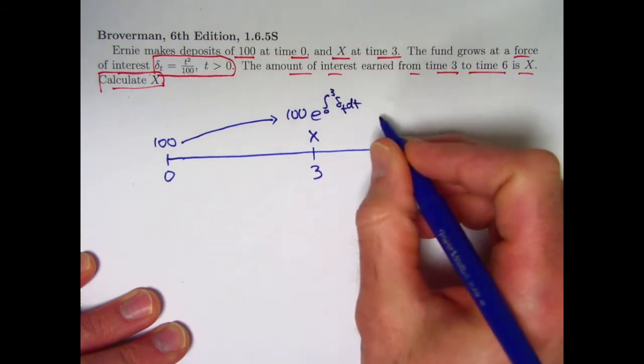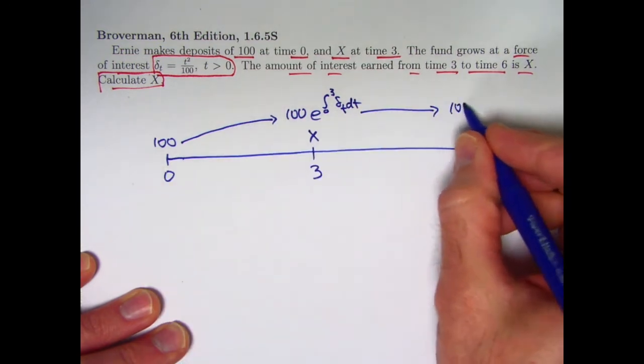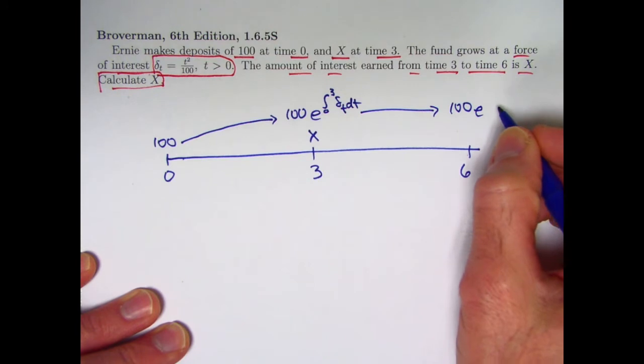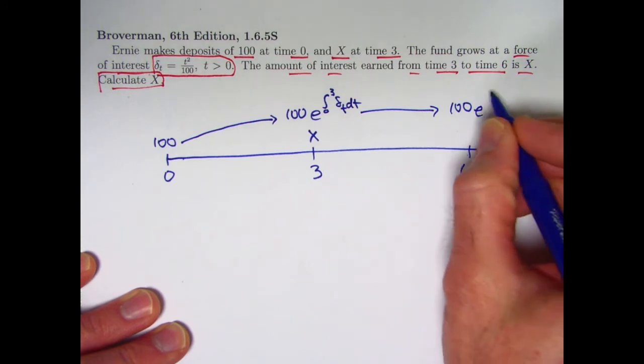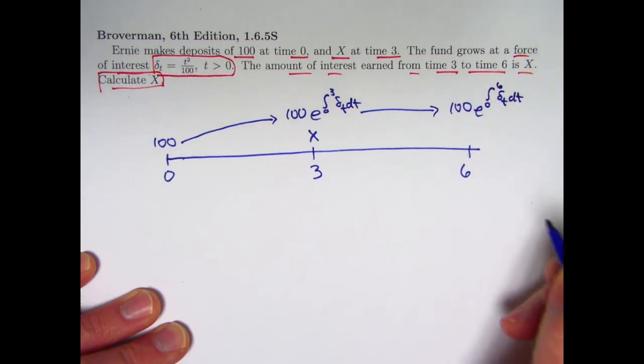It also means, at time 6, that initial 100 will grow to 100 times e to the integral of the force of interest from time 0 to time 6. That's what it means to have that force of interest. That's how that money grows.